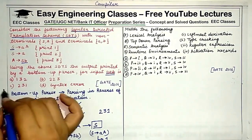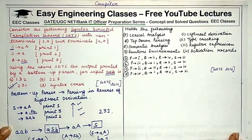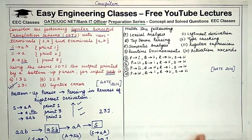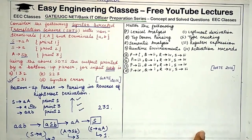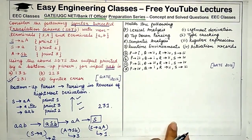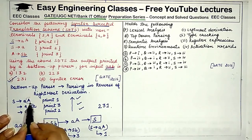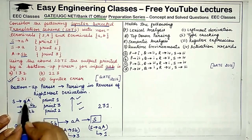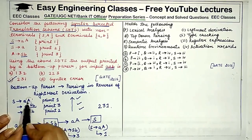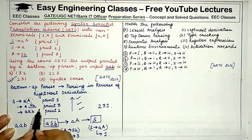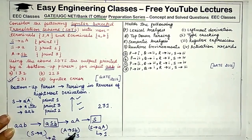So the output is 2, 3, 1 — the correct answer is option C. To summarize: a bottom-up parser does parsing in reverse of rightmost derivation. In rightmost derivation, at every point we substitute the rightmost non-terminal to generate the next intermediate form, and the bottom-up parser performs this in reverse order.